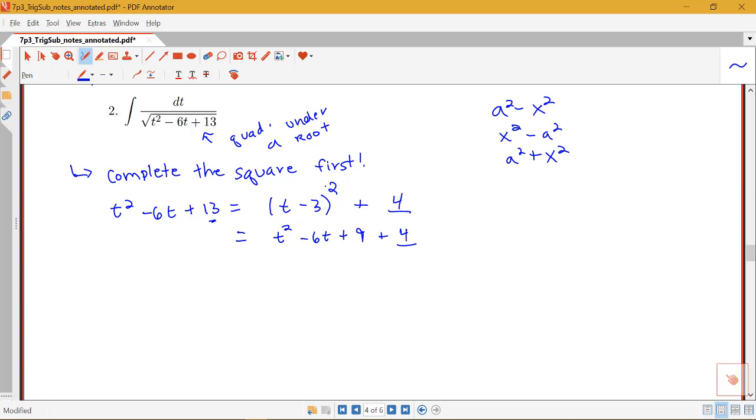So to get back 13, I'd have to add 4. So notice that t minus 3 squared plus 4 would be equal to t squared minus 6t plus 13. So this would be our completing the square form. So I can write down the integral of dt over the square root of t minus 3 squared plus 4.